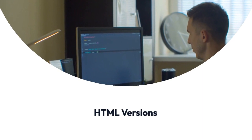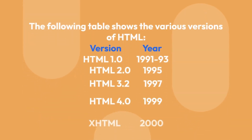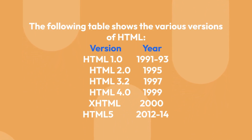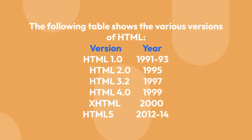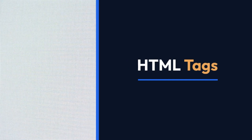HTML versions. This table shows the various versions of HTML. HTML 1.0 was released in 1991–1993, and the latest version is HTML5.